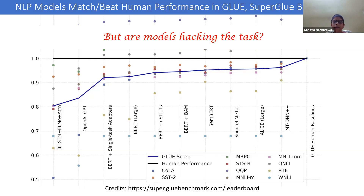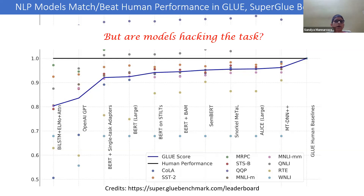The question remains: how well does this benchmark performance translate to the real world? These are known datasets and models have been made to do well on them. But are these models actually solving the task, or are they just hacking the task? This is a very important difference — if a model needs to work well in the real world, it needs to solve the task, not hack it. That is an important question from a research perspective.